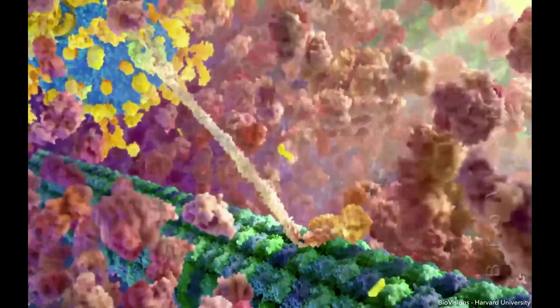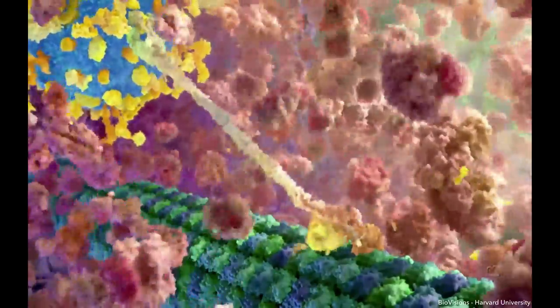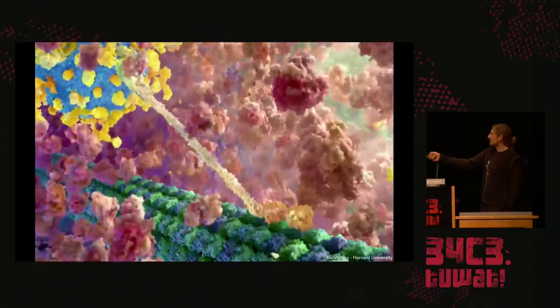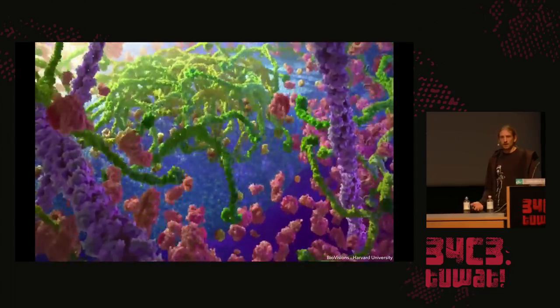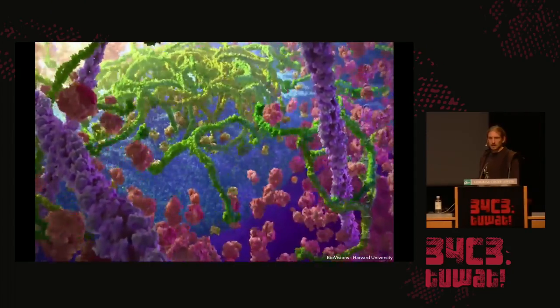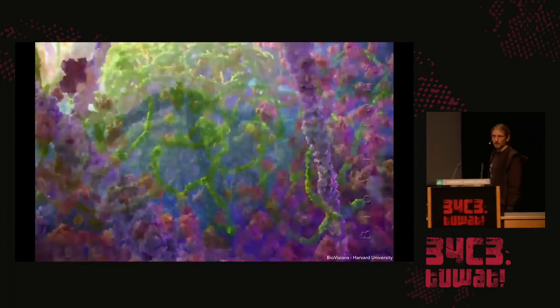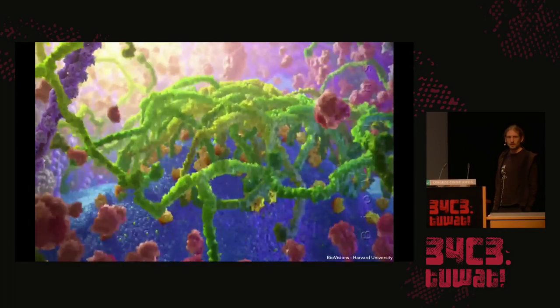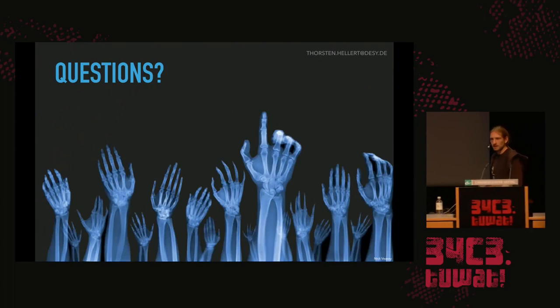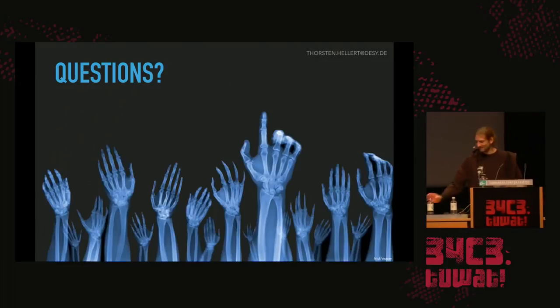Von den ganzen Bildern kann man dann die Struktur des Moleküls kalkulieren und wirklich so einen Film von einer chemischen Reaktion machen. Es dauert zwar noch eine Weile, bis wir solche Filme wirklich machen können, aber ich habe euch gezeigt, wie man die Struktur von Proteinen sehen kann, und wie Freie-Elektronen-Laser es uns ermöglichen werden, in ein paar Jahren diese Art von Filmen wirklich zu drehen. Danke, und stellt bitte Fragen.